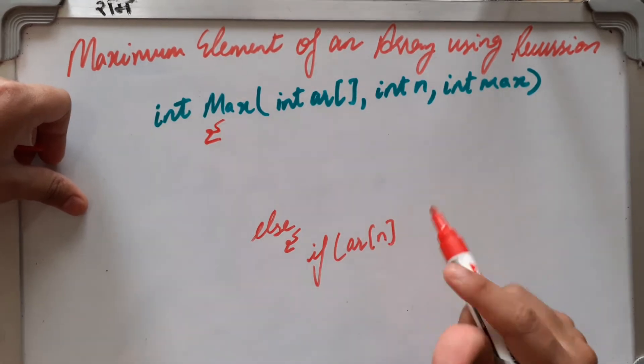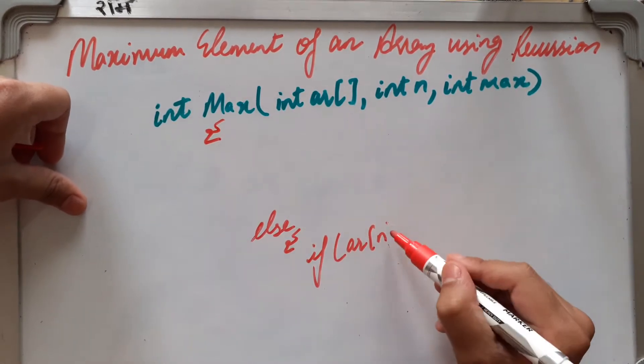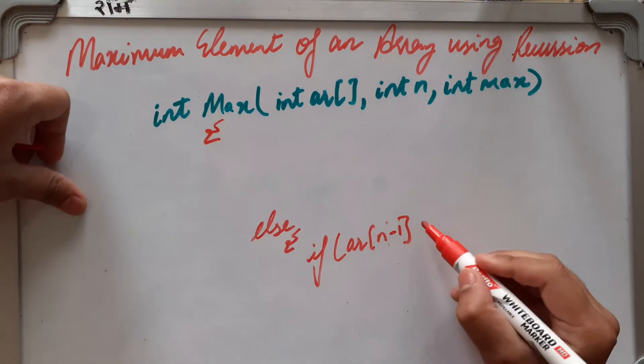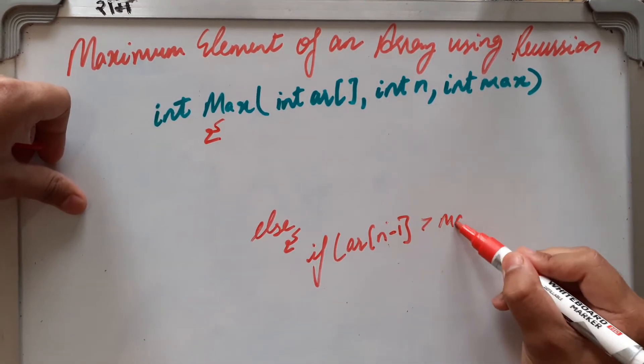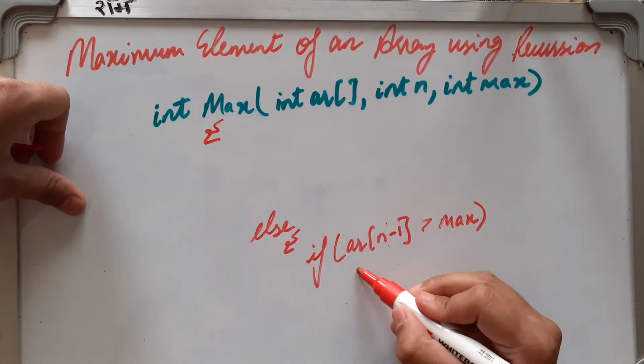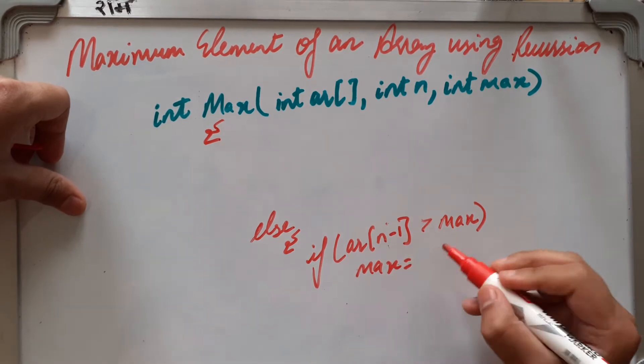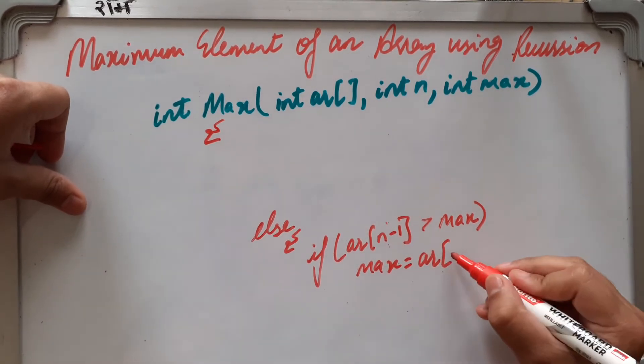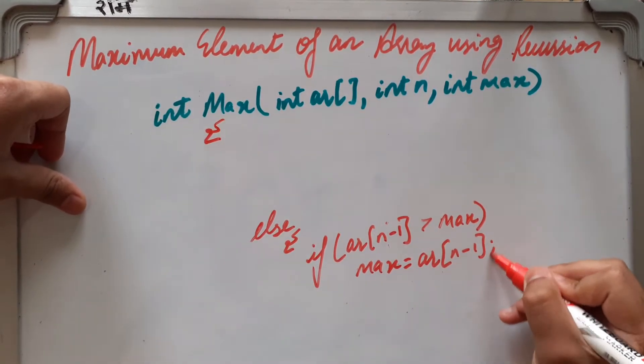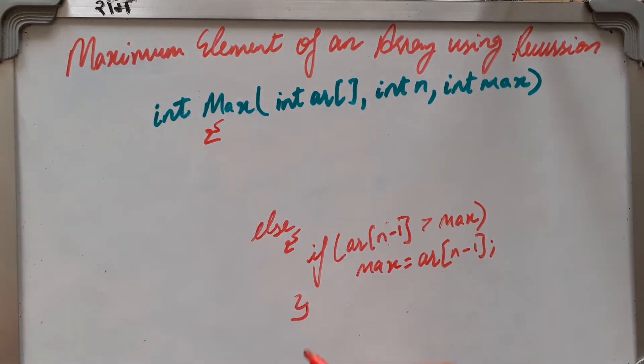Like if n minus 1 is greater than max, then max equals to arr of n minus 1. And we have to again call this thing, max arr comma n minus minus comma max.